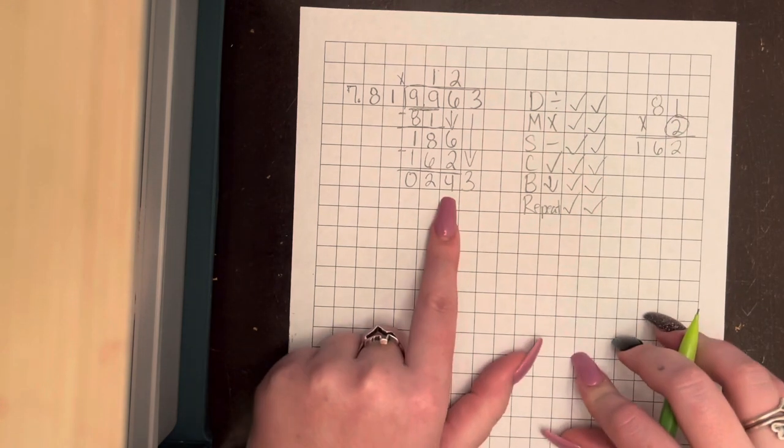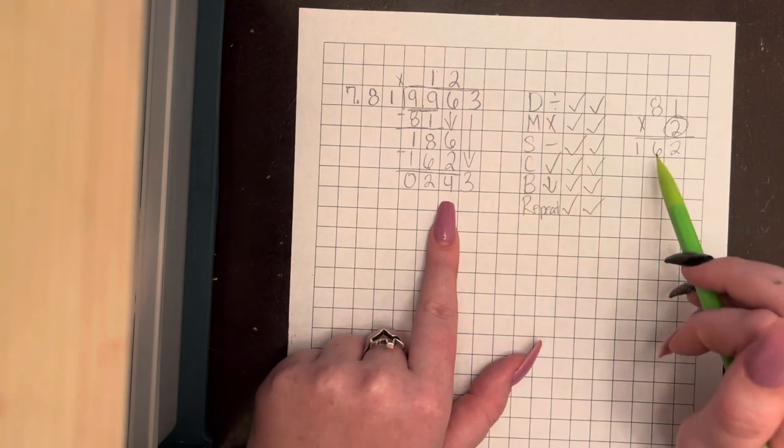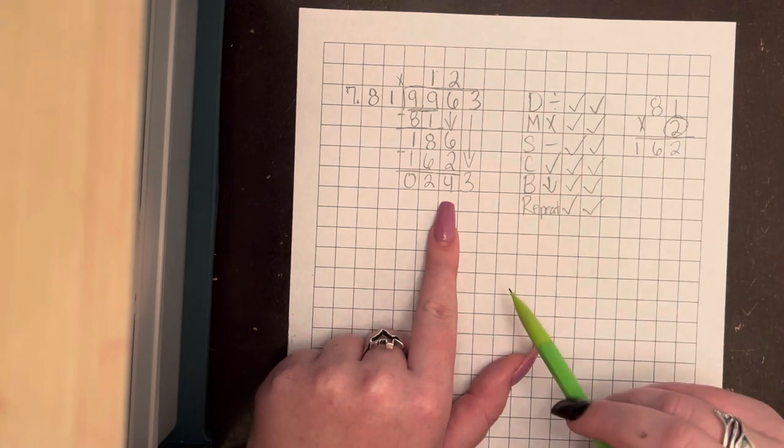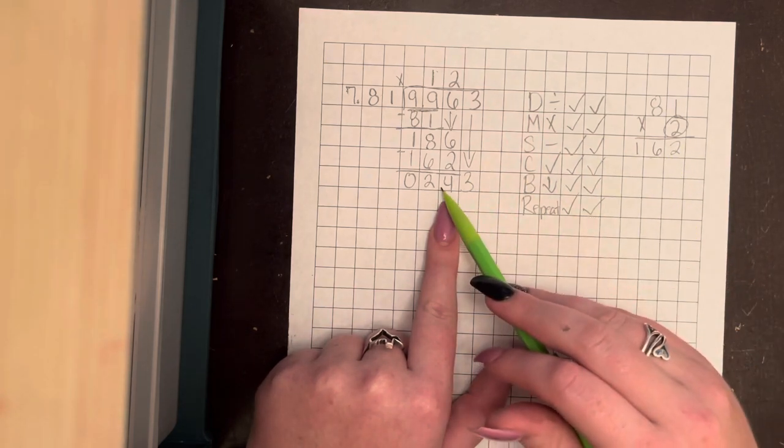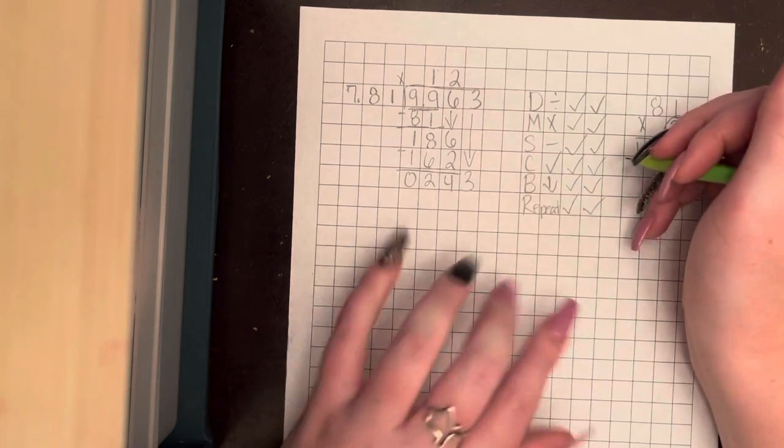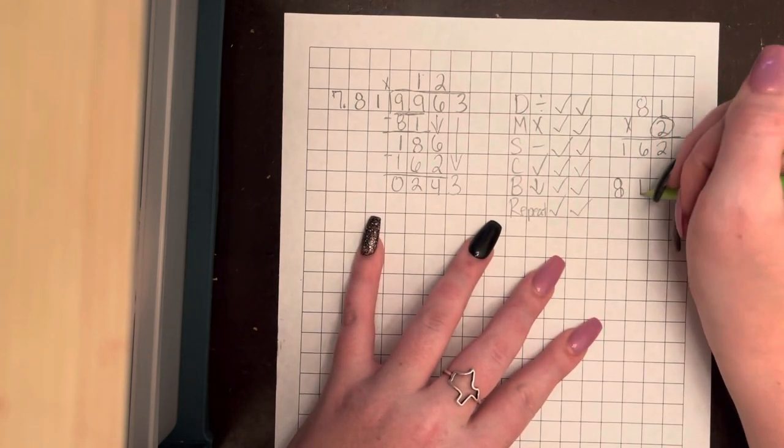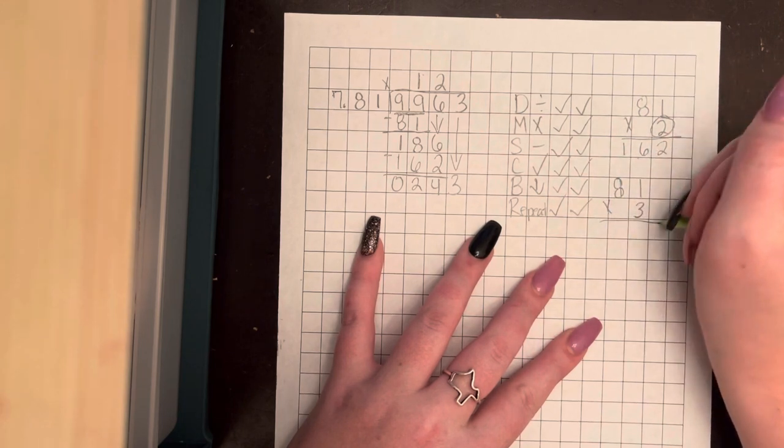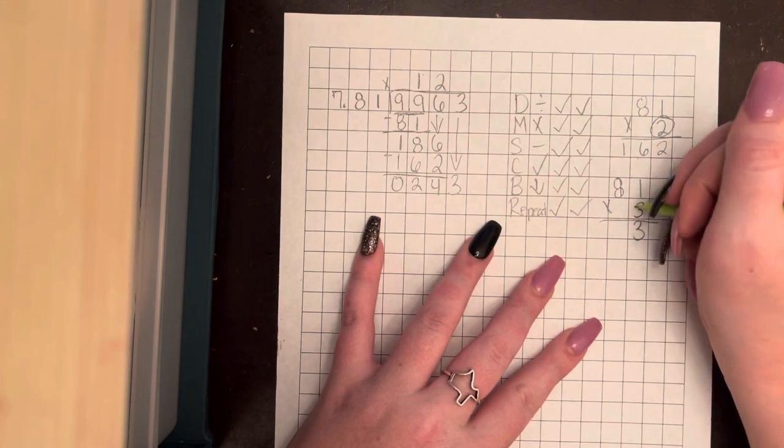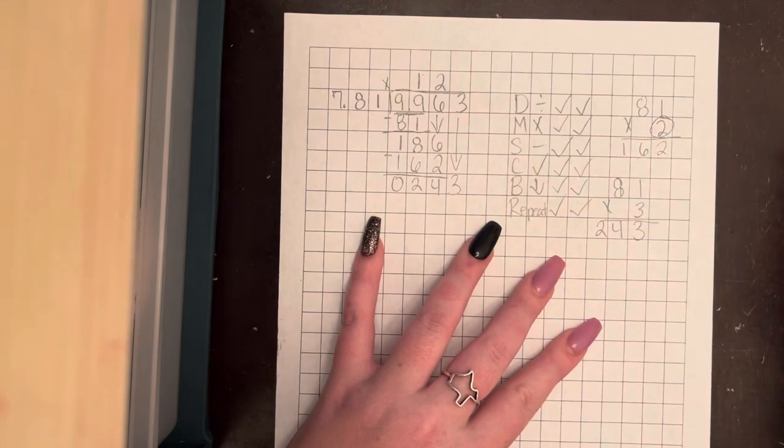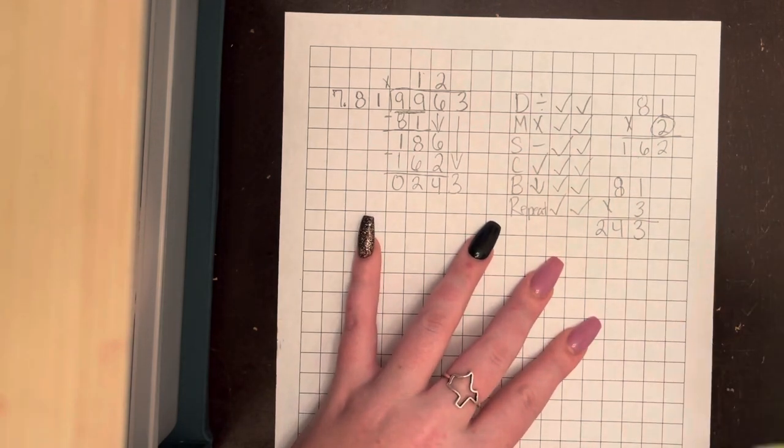Now we have 243. So we already know 162 is smaller than 243. So we're going to try the very next number. Because 81 is a big number. So 81 times 3. 8 times 1 is 3. 8 times 3 is 24. Perfect. 243.